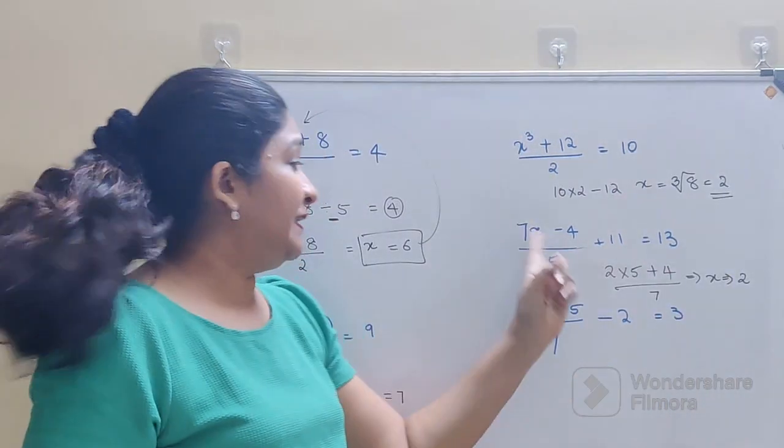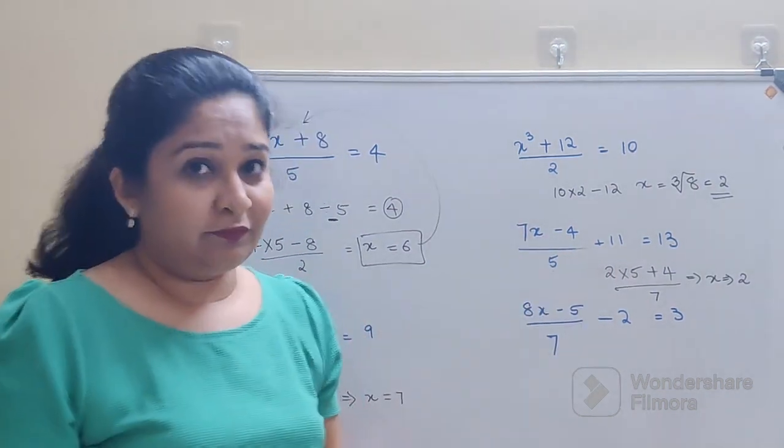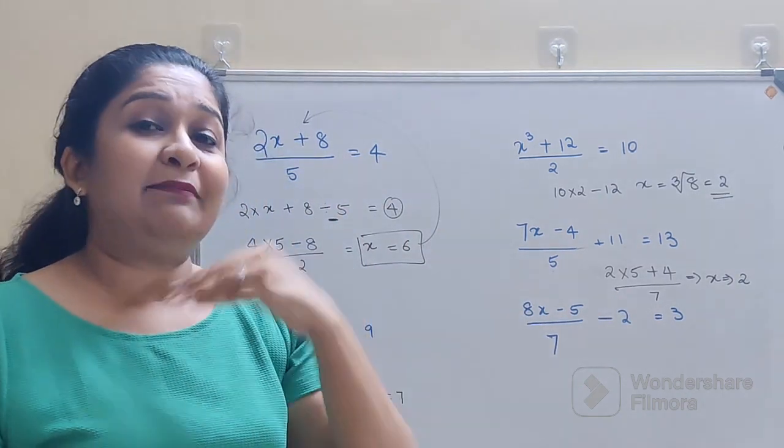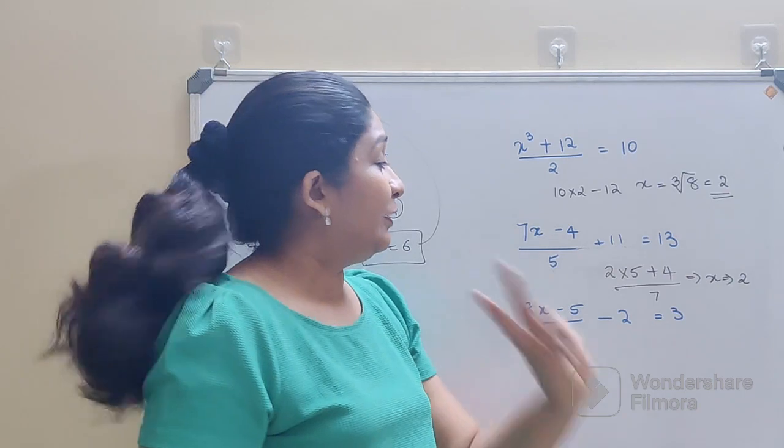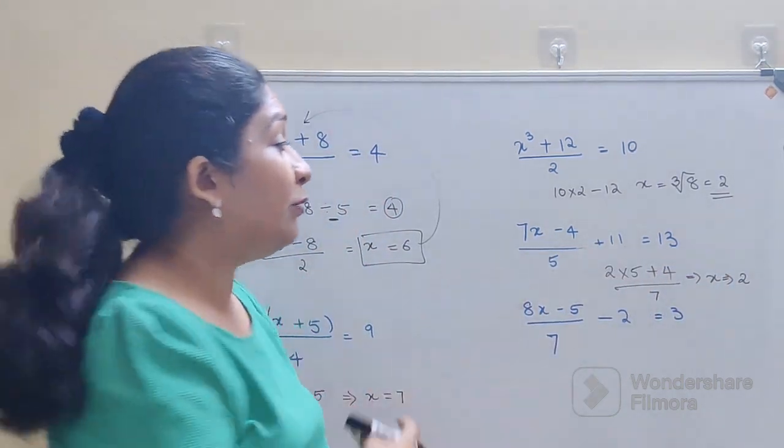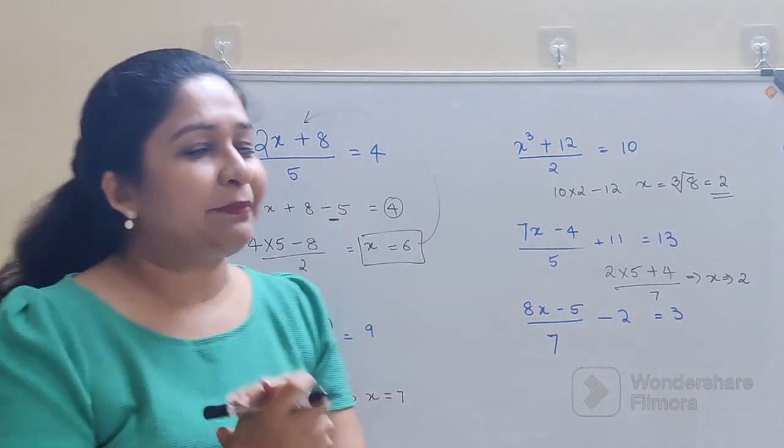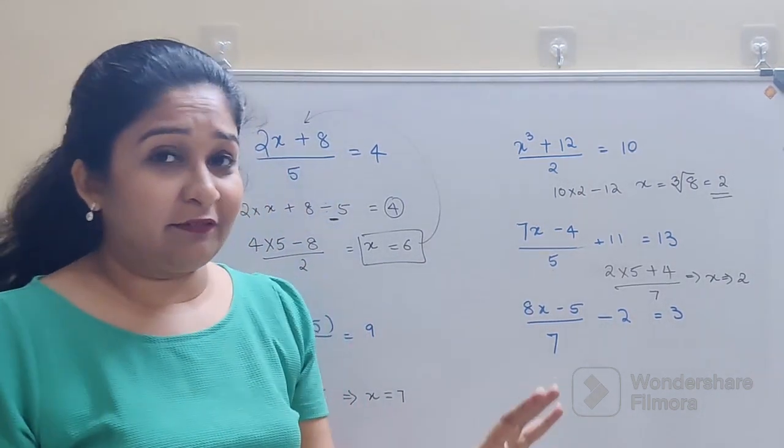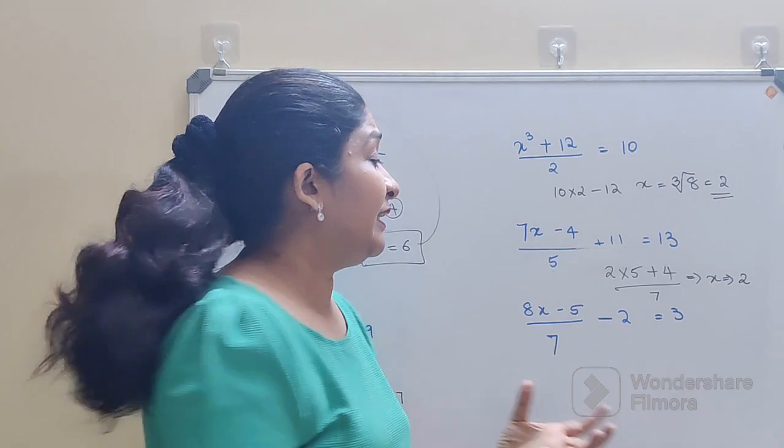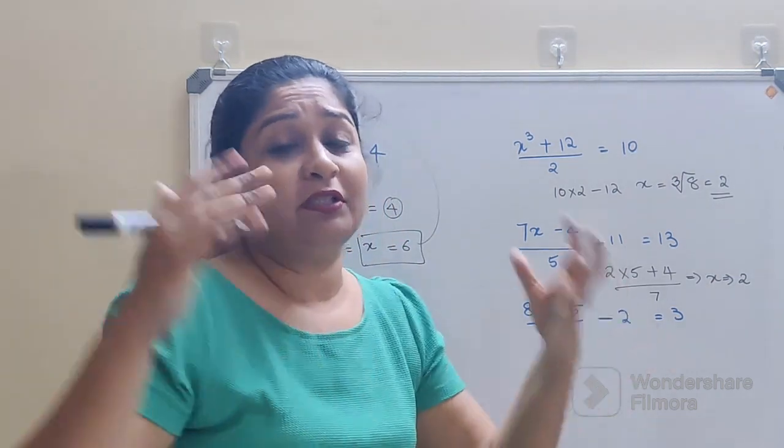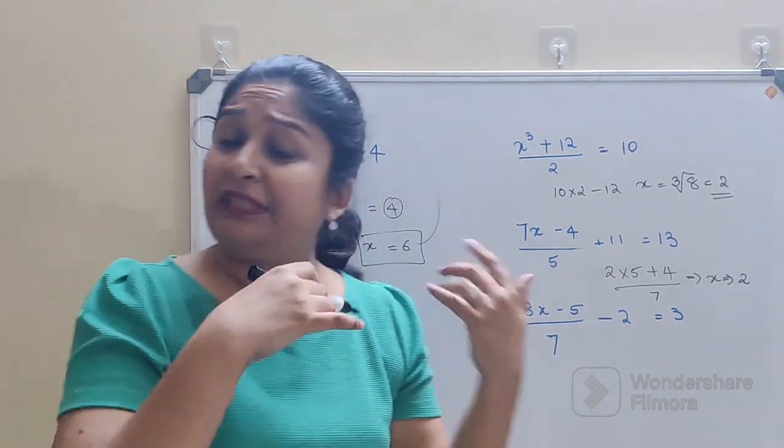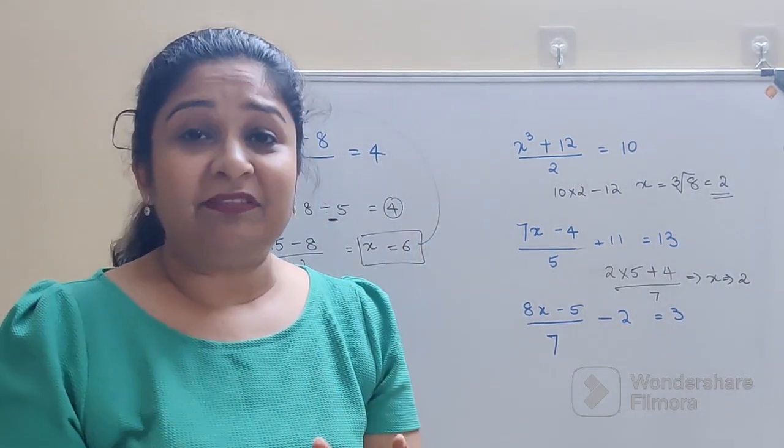Now let's try and substitute this. So 7 into 2 gets you 14, 14 minus 4 gets you 10, 10 divided by 5 will get you 2, and 2 plus 11 will get you 13. So I hope you have understood how to solve these kinds of questions. Please, please, please don't run away from algebra. It is a wonderful, wonderful topic. And still if you are getting stuck or still if you think that I have not taken all these scenarios or somewhere you know you are still getting stuck, please let me know.